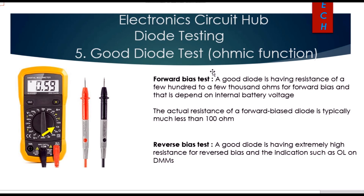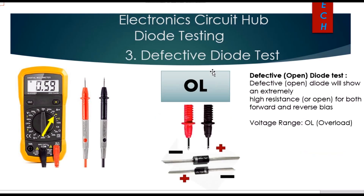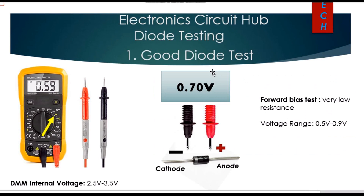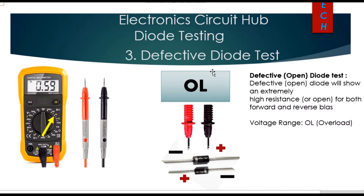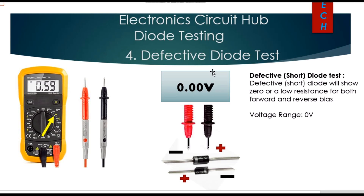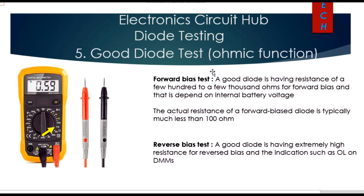In summary: using the diode test function, a good diode shows 0.7 V in forward bias and OL in reverse bias. If open, it shows OL for both; if shorted, it shows 0.00 V for both. Using the ohmic function, forward bias shows low resistance and reverse bias shows OL. That's all — hope you understand the concept, thank you for watching.